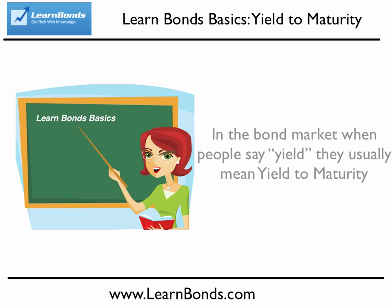When people talk about the yield of a bond, they're almost always referring to the bond's yield to maturity. Yield to maturity takes into account the coupon interest payment you receive on the bond, changes in the value of the bond as it moves towards maturity, and the return received on the reinvestment of interest payments.